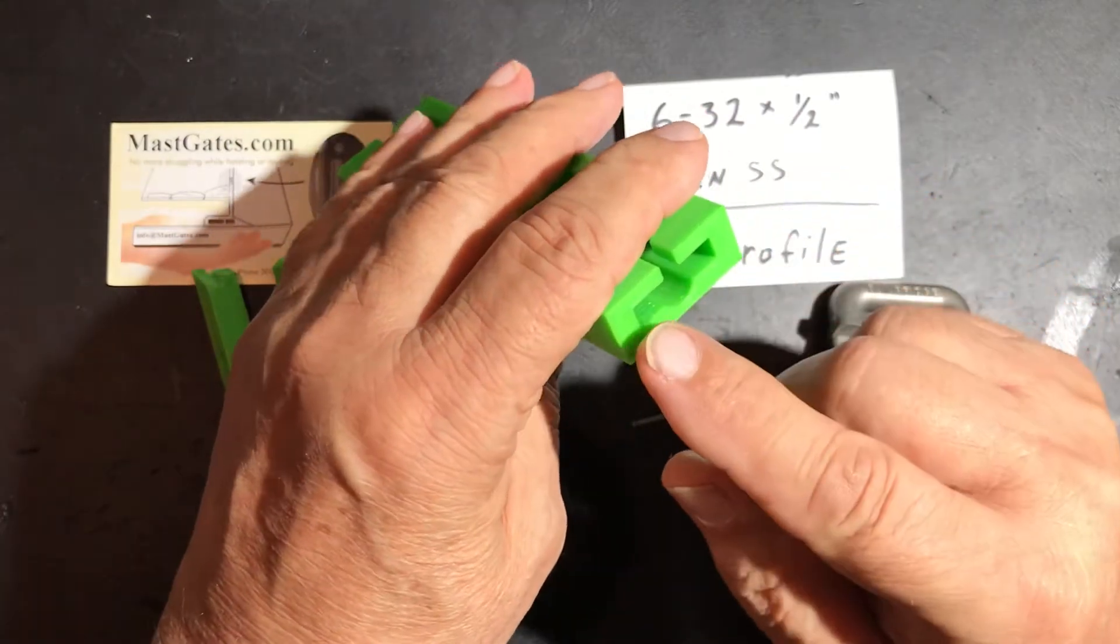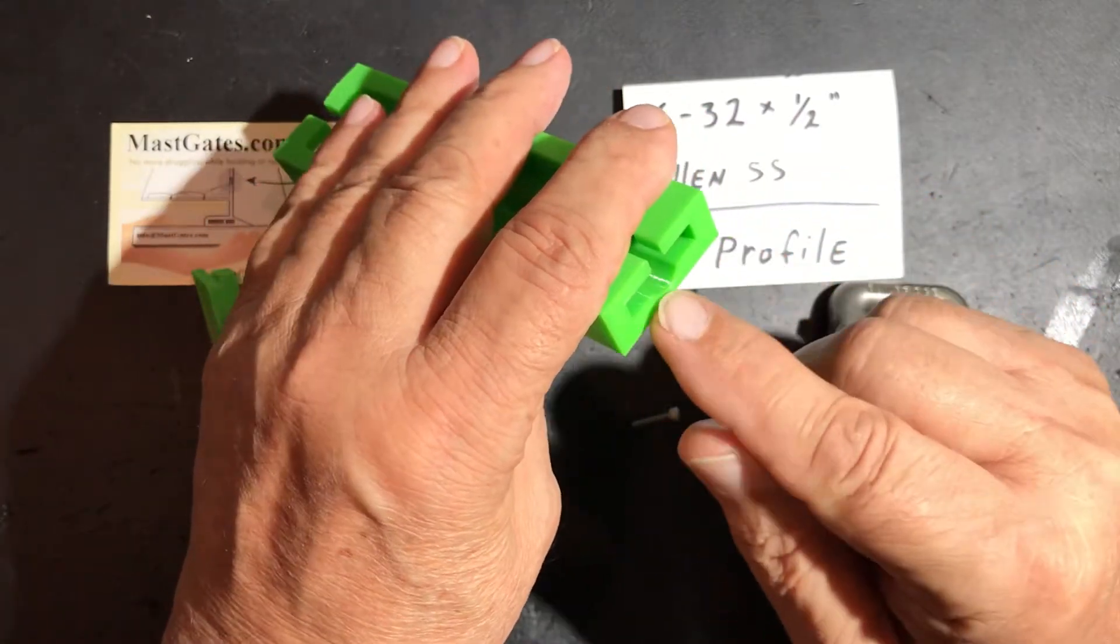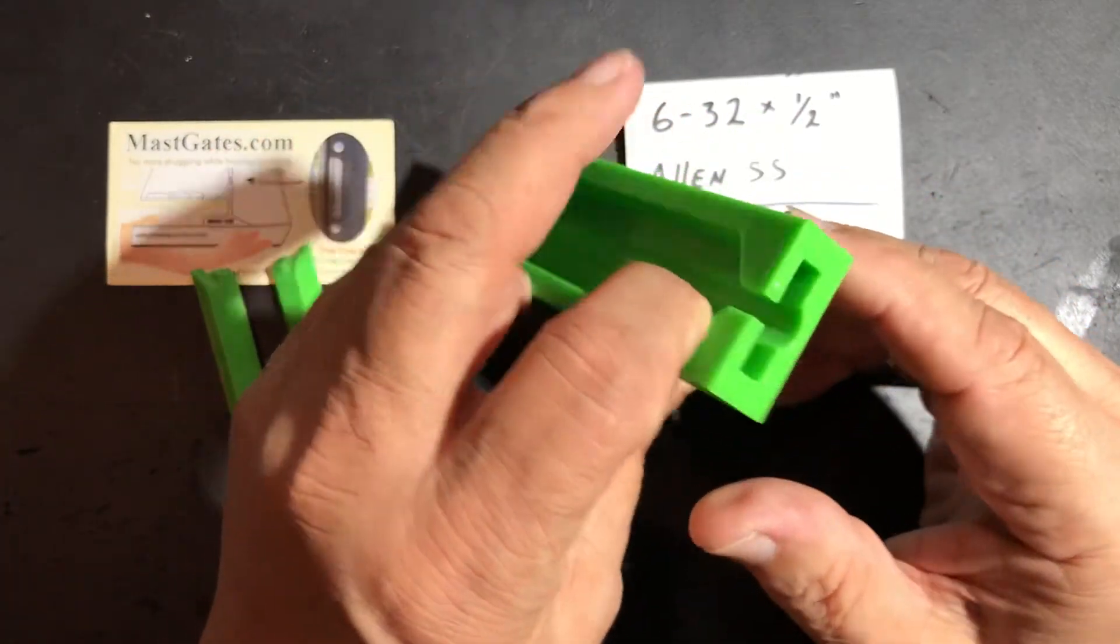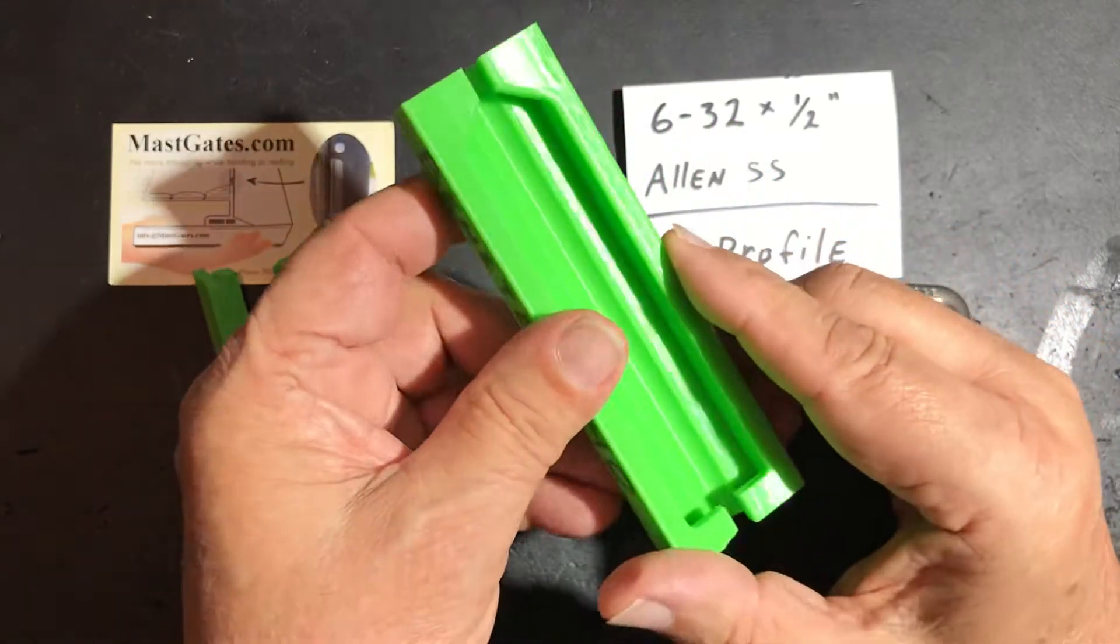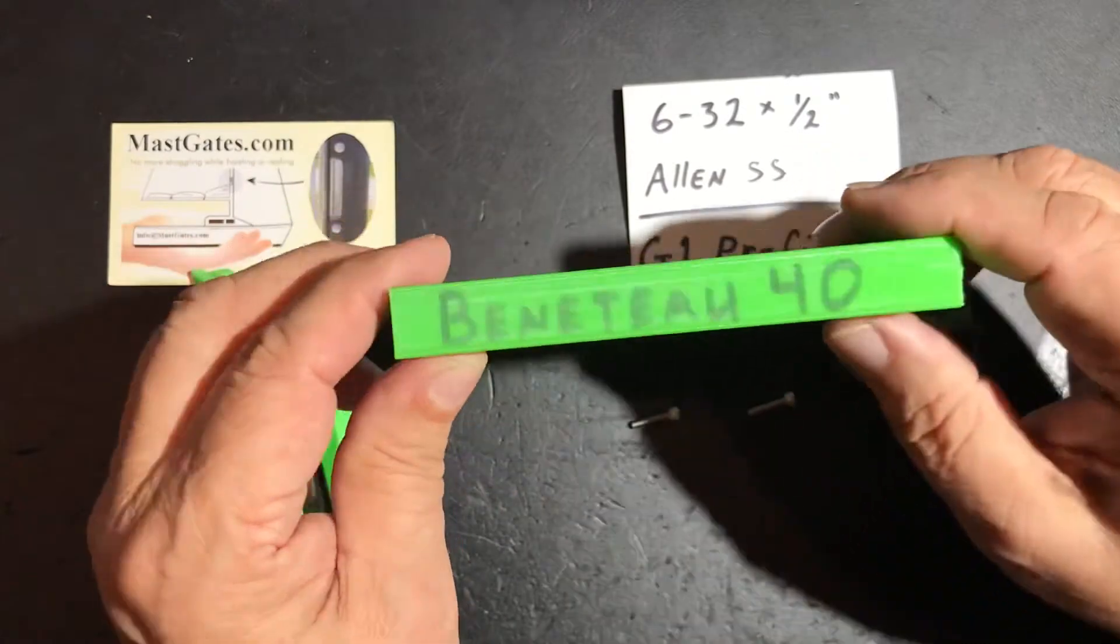This is what a G1 looks like. It's a rectangle and a concave cut, and this is from a Beneteau 40.